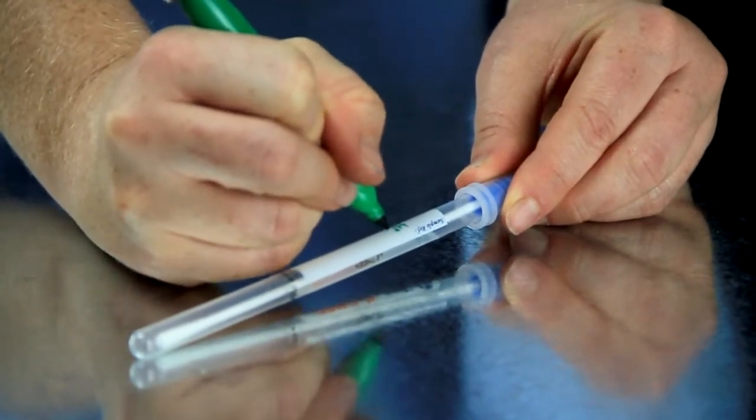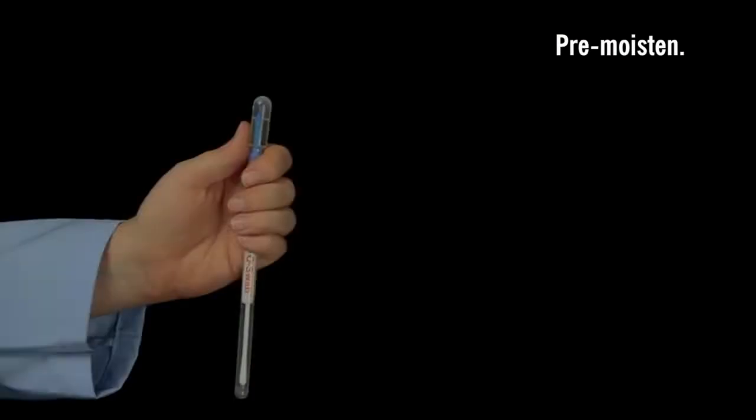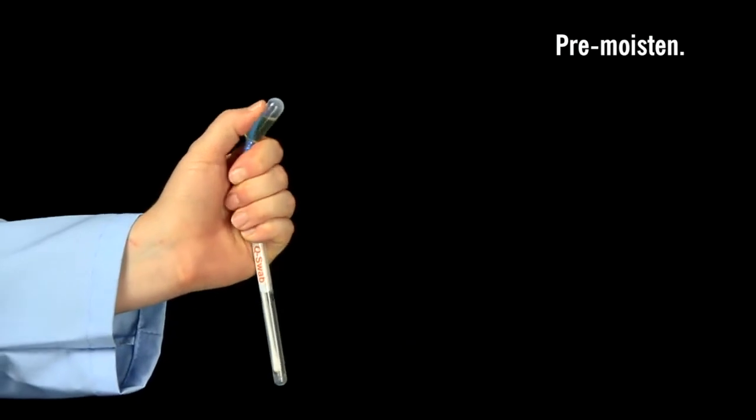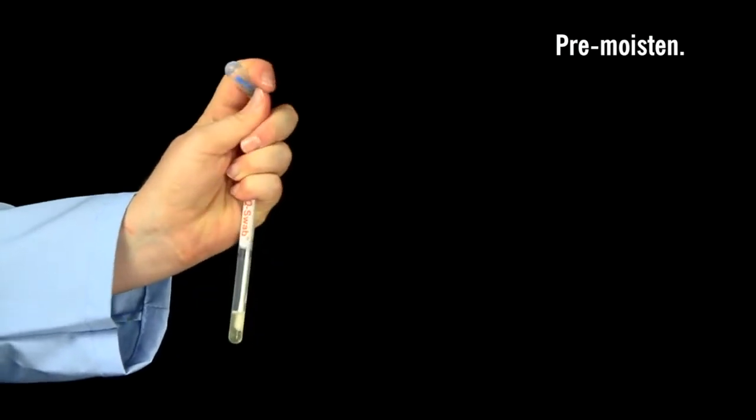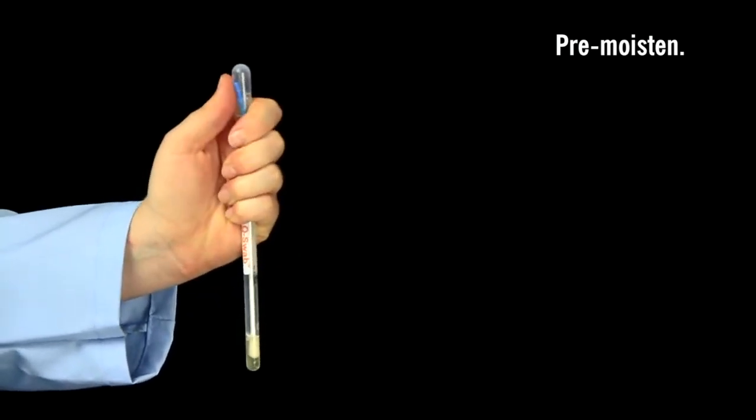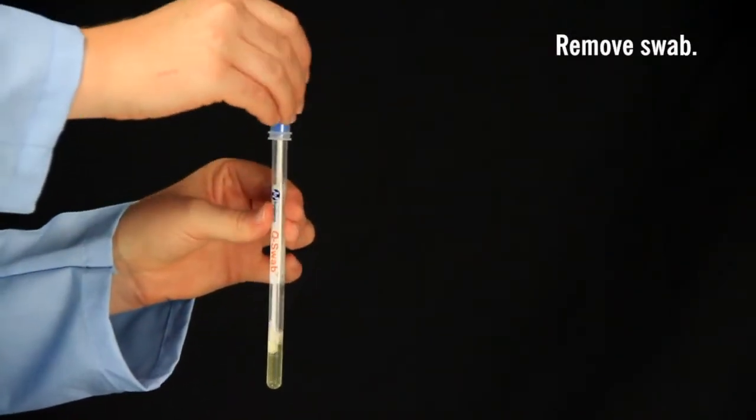Write the test location on the label for easy identification. If the swab needs to be pre-moistened, break the snap valve to wet the swab tip before sampling. Remove the swab from the tube.